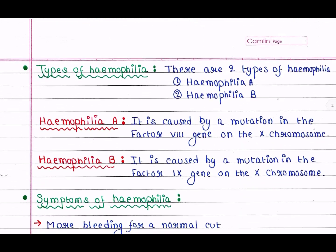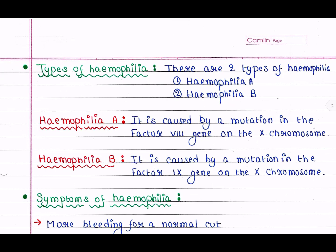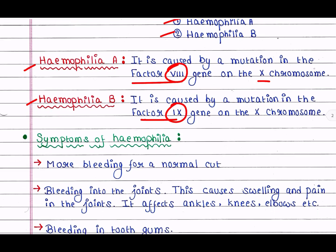Next, we will look at different types of hemophilia. There are two types: Hemophilia A and Hemophilia B. Hemophilia A is caused by a mutation in the Factor VIII gene on the X chromosome. Hemophilia B is caused by a mutation in the Factor IX gene on the X chromosome. Many blood clotting factors are present in our body, and Factor VIII and Factor IX are two of them.